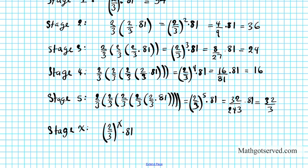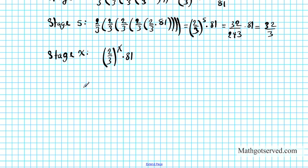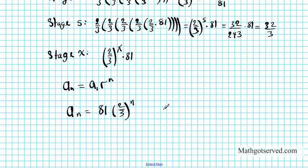How is this connected to a geometric formula? The geometric series is given by aₙ = a₁ times r to the n. In this case, this is a geometric series where the nth term aₙ is the initial term 81 times (2/3) to the nth power. The common ratio is 2/3 and the original term a is 81.